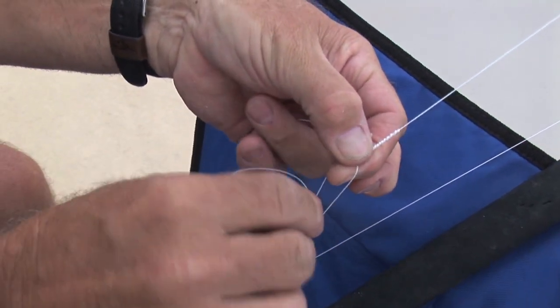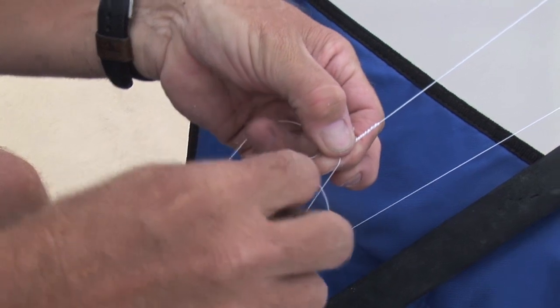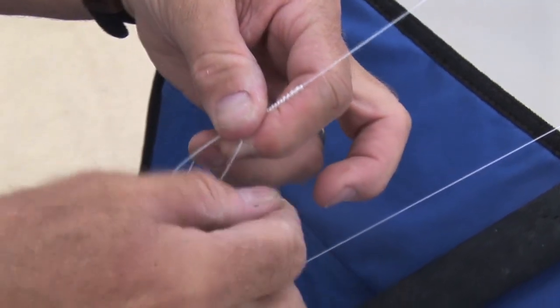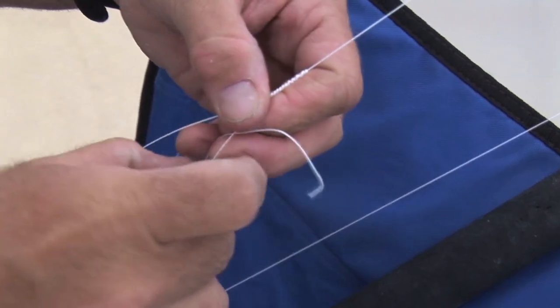You do a quick half hitch around that first one, pinch it up. Half hitch around the second one, cinch it up.